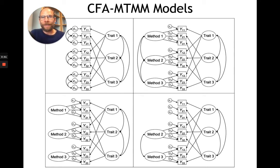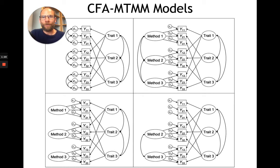At the time, we didn't have confirmatory factor analysis. What they proposed was to analyze a correlation matrix — a so-called MTMM matrix — for a research design where you have multiple traits measured by multiple methods. Then, based on different types of correlations in such an MTMM matrix, we can find out about convergent validity or agreement between methods and about discriminant validity, or the degree to which different constructs are distinguishable and not too highly correlated.